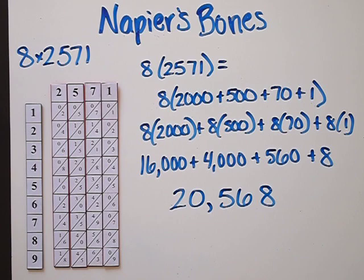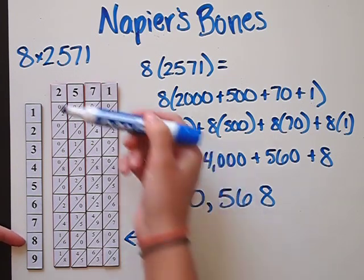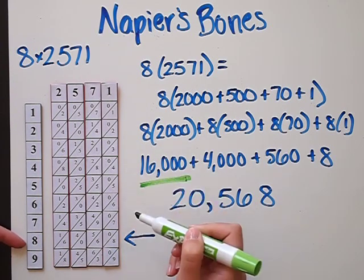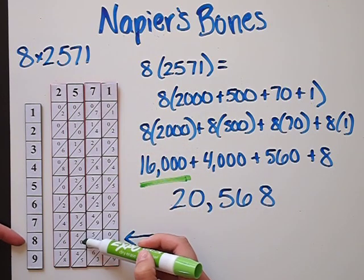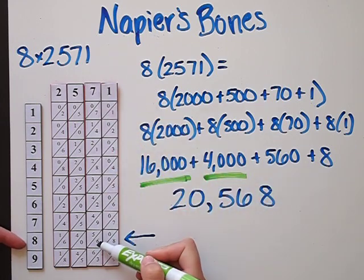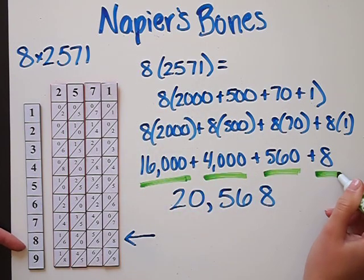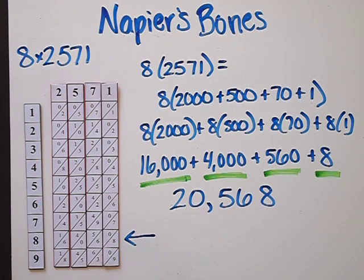Notice that in the eighth row of 2,571 we can actually see the partial products: 8 times 2,000 gives our 16,000, 8 times 500 gives our 4,000, 8 times 70 gives our 560, and 1 times 8 gives our 8. The way the numbers are organized in the parallelograms allows you to add numbers within the same place value, just as if you wrote them in columns as we usually do.